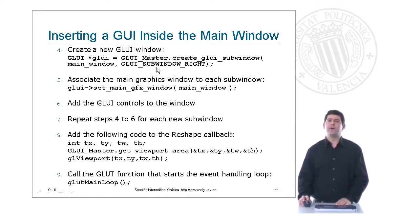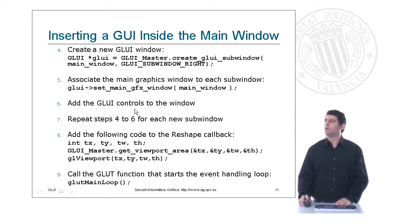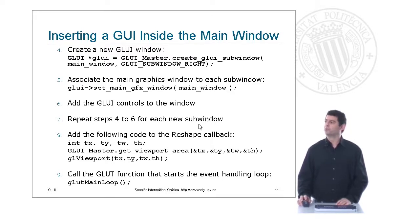Then we can define the sub-window where we are going to locate the user interface. Remember again that you have to set the main graphics window associated to that sub-window. We add the GLUI controls to the window and we can repeat steps 4 to 6 for each new sub-window containing a user interface. You can add at most 4 sub-windows.